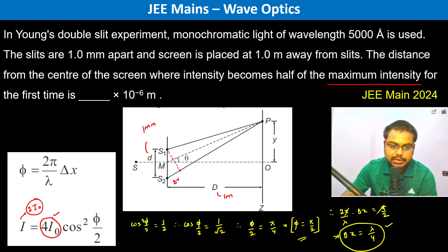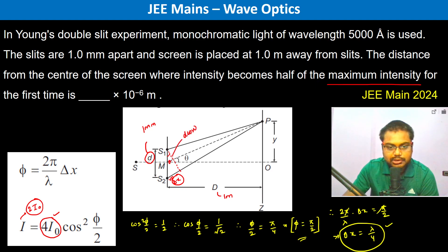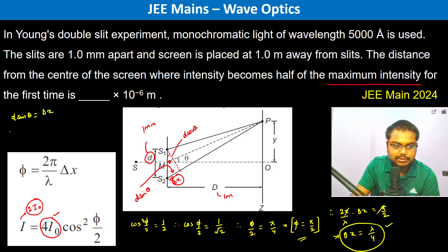The path difference Δx = λ/4. Now geometrically, Δx = d·sinθ. In the diagram, d is the slit separation, and this gives us d·sinθ = d·cosθ components. Since θ is small, we take sinθ ≈ tanθ.